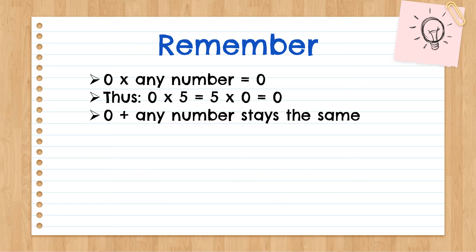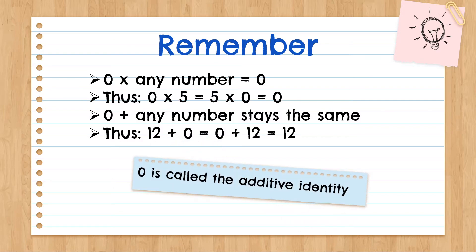Zero plus any number stays the same. The example is twelve plus zero is the same as zero plus twelve, which equals twelve. Zero is called the additive identity.